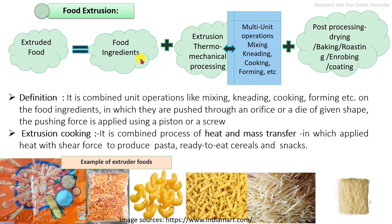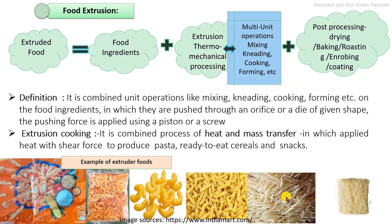Extruded foods means foods which are prepared from food ingredients in which cereal grain is a major ingredient, which are extruded into the product. The basic principle of extrusion technology is thermo-mechanical processing — that means by application of heat transfer and mass transfer, involving a number of unit operations: mixing, kneading, cooking, and forming. The resulting product then undergoes post-processing, which may include drying, baking, roasting, enrobing, or coating, resulting in products of different shapes and sizes as per requirement.